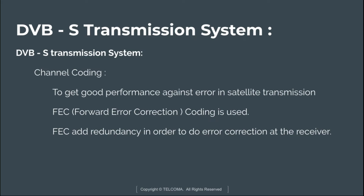The first processing step is channel coding. To get good performance against errors in satellite transmission, FEC coding — Forward Error Correction coding — is used. FEC adds error redundancy in order to enable error correction at the receiver.